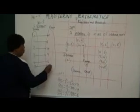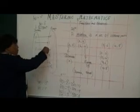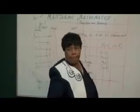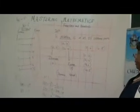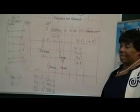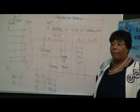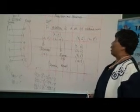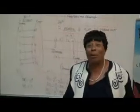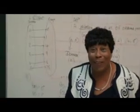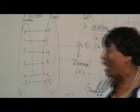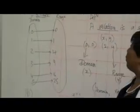Now, surprisingly — what do we call these numbers in the range? 0, 1, 4, 9, 16, 25. We call them square numbers. So we see that the function f(x) = x squared produces the square numbers as its range. That is why every little corner, every street — anywhere — we're going to sit down and teach them.